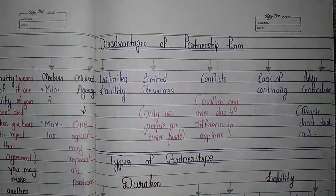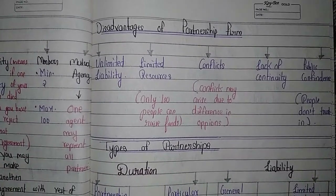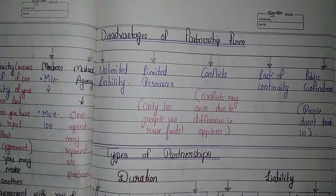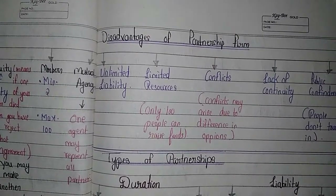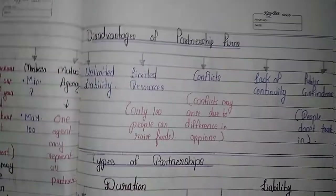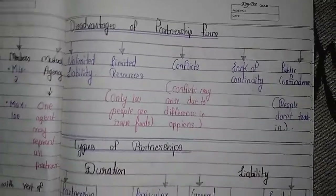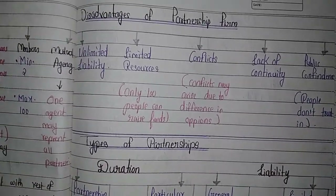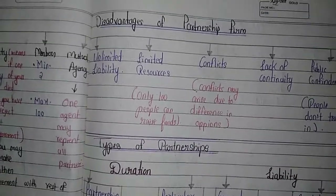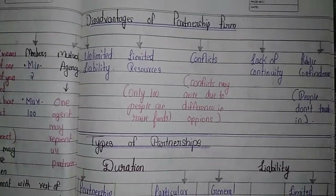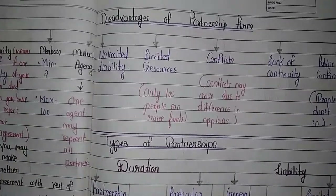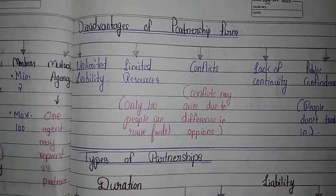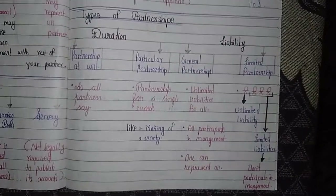Fourth, lack of continuity — as discussed, if one of your partners dies, the agreement will be dissolved and you will have to create a new agreement. Fifth, lack of public confidence — since you are not publishing your accounts, the public will not trust you and will not invest in your firm.